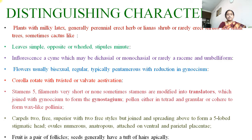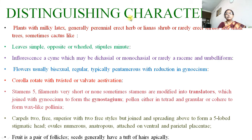The distinguishing characters: plants are with milky latex, generally perennial erect herbs or lianas, shrubs and rarely trees. Sometimes cactus-like plants are found in this family, and most of the plants present in this family are xerophytic in nature.